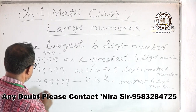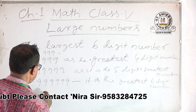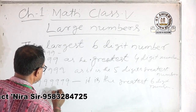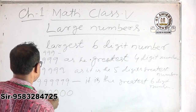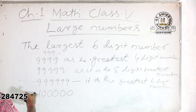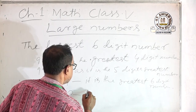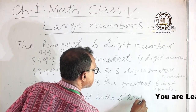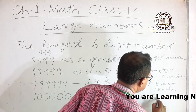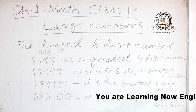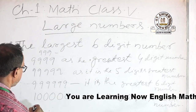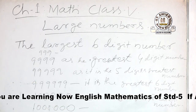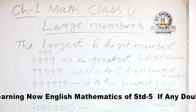Now, which one is the 6-digit smallest number? The 6-digit smallest number is 1 lakh. If you put one more zero to its right, it will be the 7-digit smallest number.